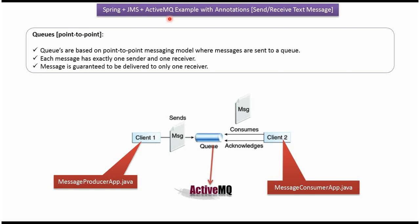This video tutorial explains Spring JMS with ActiveMQ example using annotation configuration. Client1 is the message producer, which creates and sends messages to the queue. Client2 is the message consumer, which consumes messages from the queue and acknowledges back to the queue. In this example, we will use a queue of ActiveMQ.